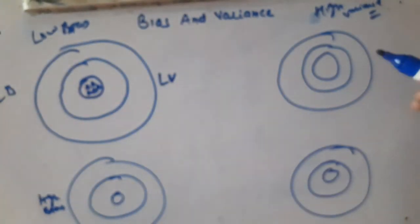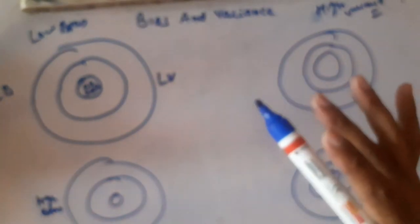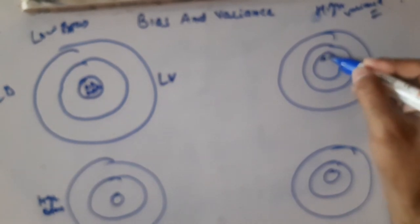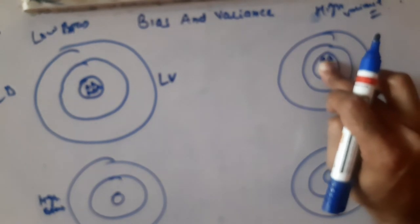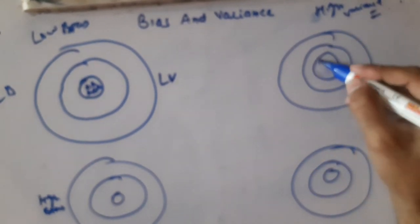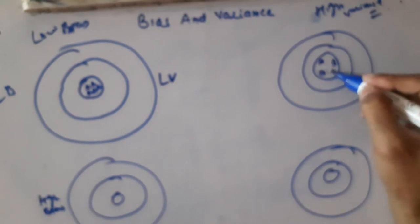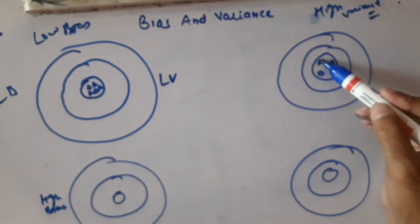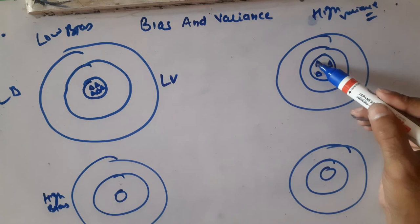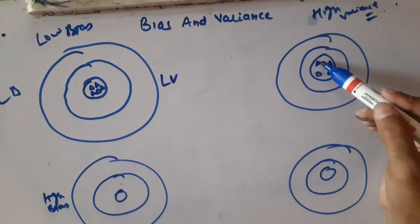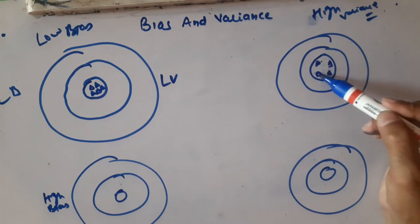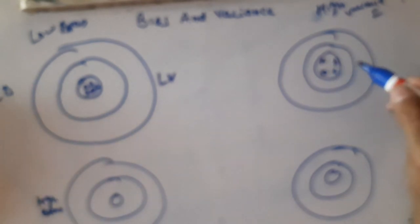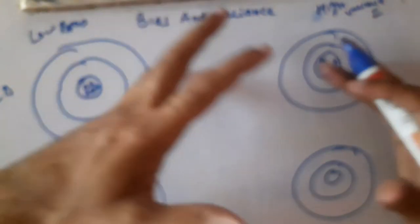Now consider another case. Here we have low bias — the points are near to the truth — but they are scattered. This is the case of low bias and high variance. The points are near the truth but have variation among them.